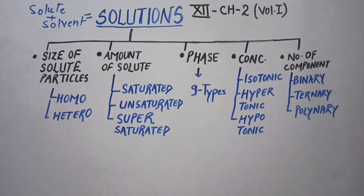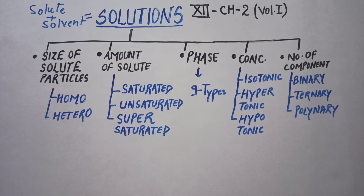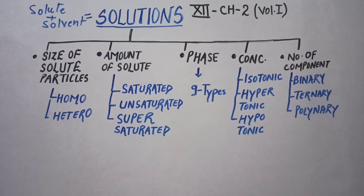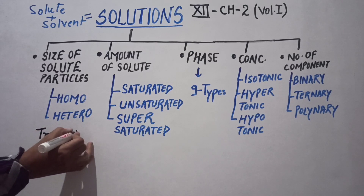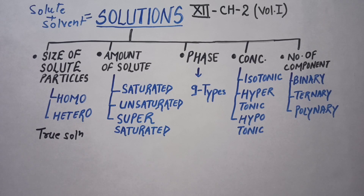First is homogeneous and second is heterogeneous. In a homogeneous solution, the solute particles completely mix with the solvent and you are not able to see them with the naked eyes — they are uniformly mixed. The example of homogeneous solutions are true solutions.